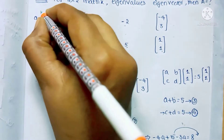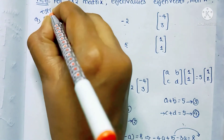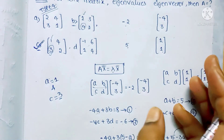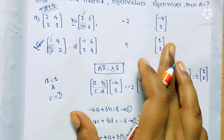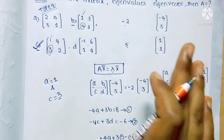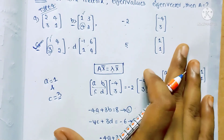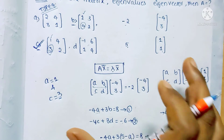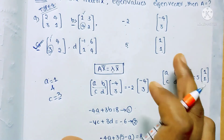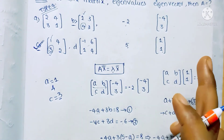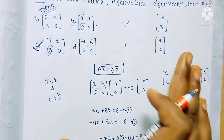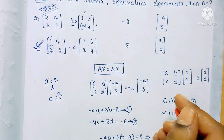This is a Type 4 problem. These four types are important for GATE preparation — in the eigenvalues and eigenvectors topic you will get 2 to 4 marks, so do more problems on this topic. If you have any doubts, please comment below. Thanks for watching.